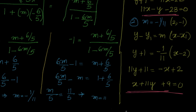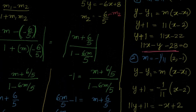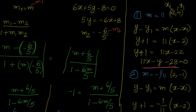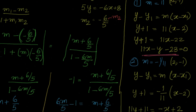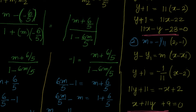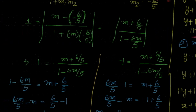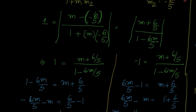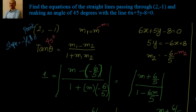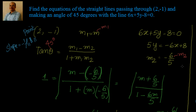You get slopes m = -1/11 and m = 11. Using point-slope form with the given point, you get two equations: 11x - y - 23 = 0 and x + 11y + 9 = 0. We will solve more examples of this concept — finding equations of lines through a given point making a specific angle with another line. Thanks for your time, bye for now.